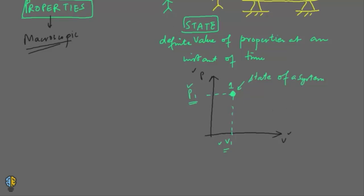After state, we need to understand what is a process. From point 1, the system moves to point 2. At point 2, property P would have a value P2 and property V would have a value V2. So the system moves from state 1 — with property P as P1 and property V as V1 — to a different state 2, at which property P has value P2 and property V has value V2.